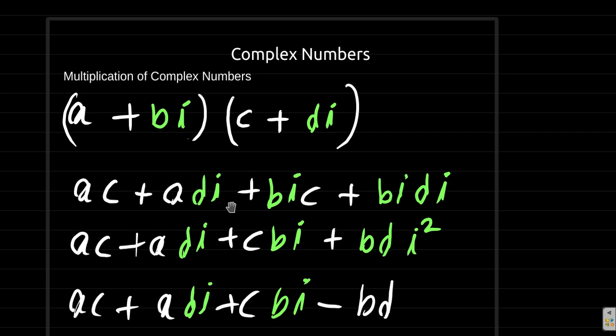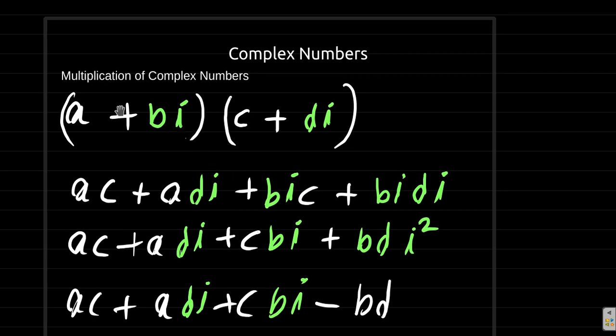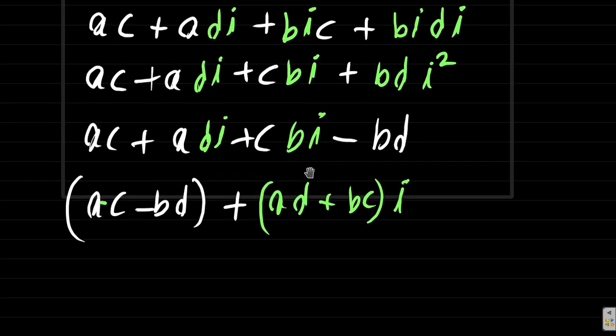But remember, you end up with a number i times a number i, so you have a new number i squared. And i squared is negative one. So the i will disappear at that point.